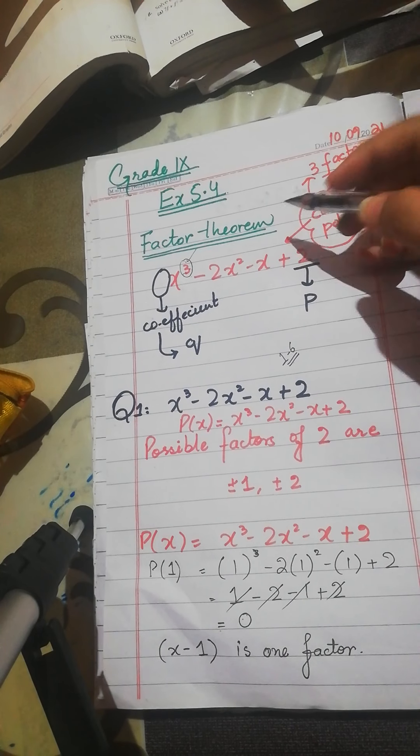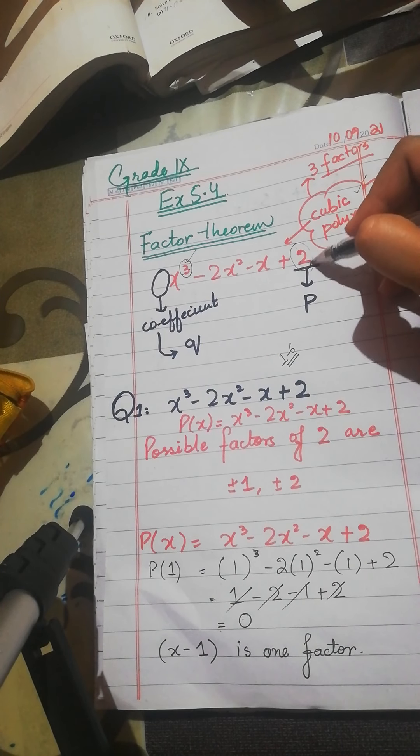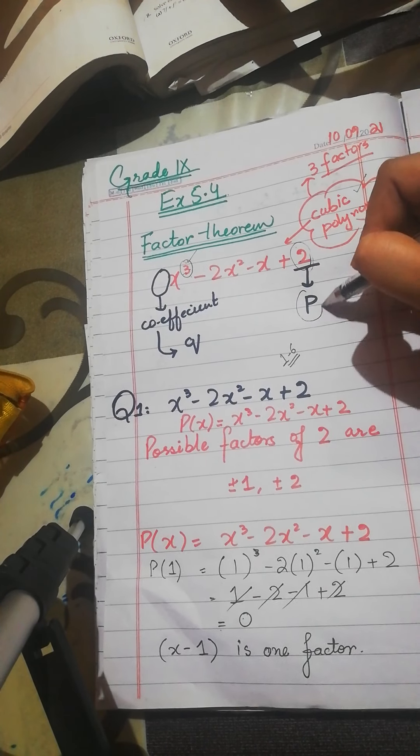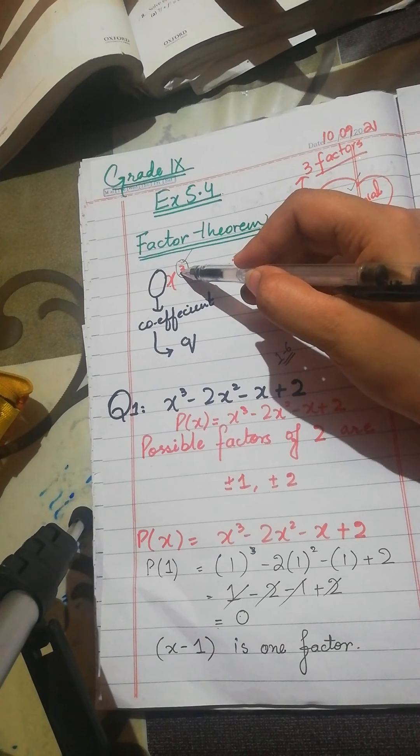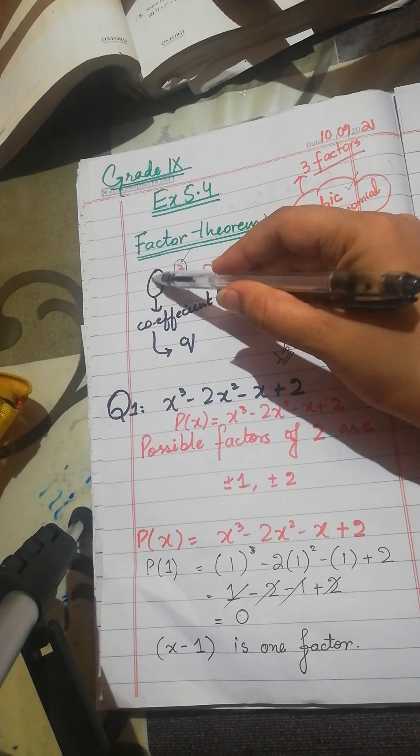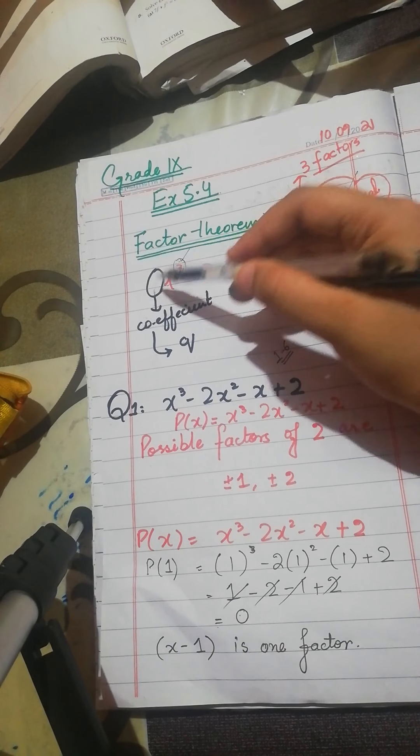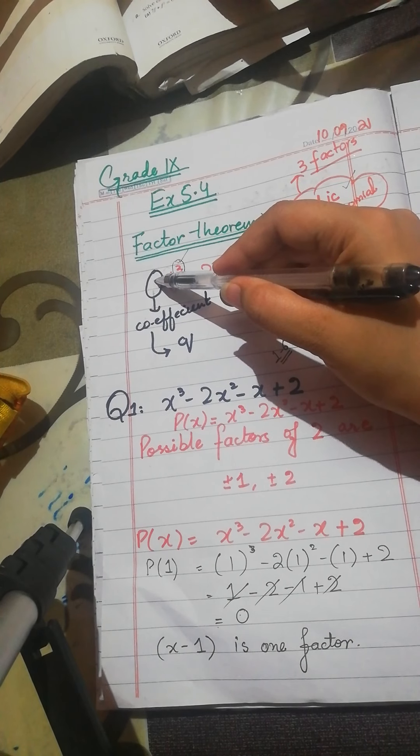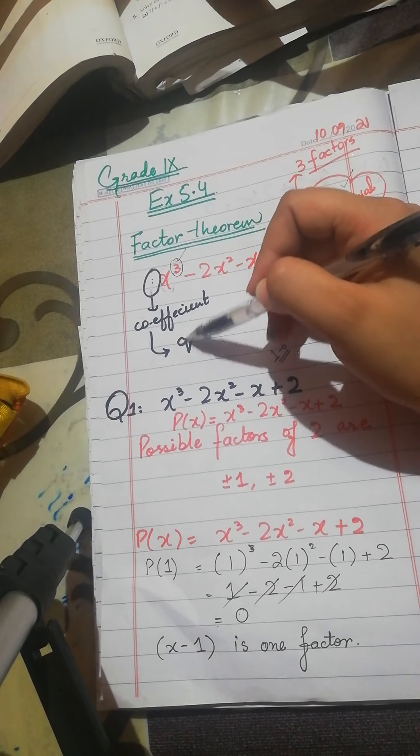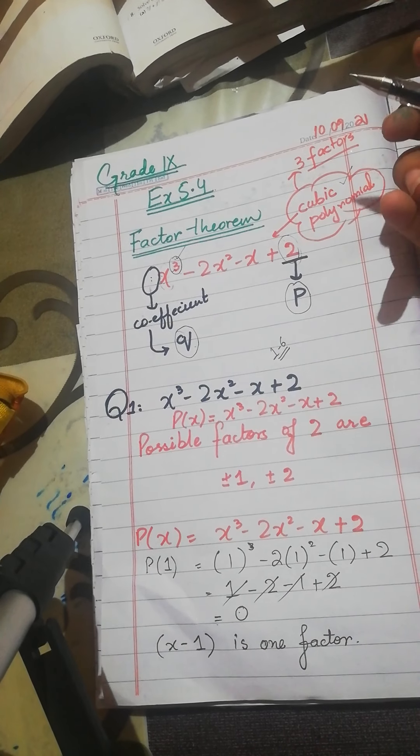Again, we have one thing. The constant term is p. We have to see it. The leading coefficient is the leading variable. We have to relate to q. We have to see p and q. We have to see the factors.